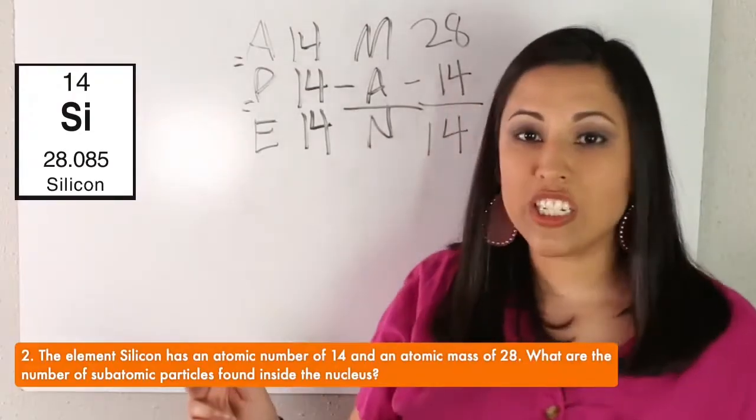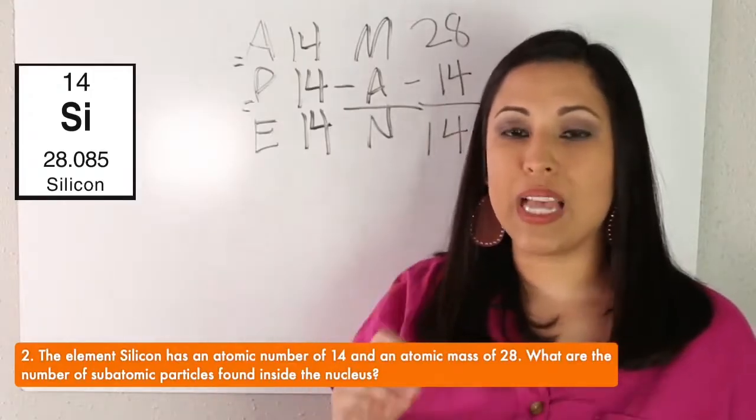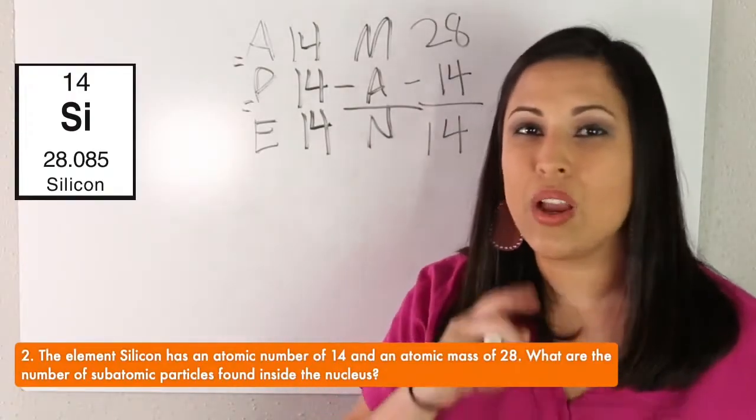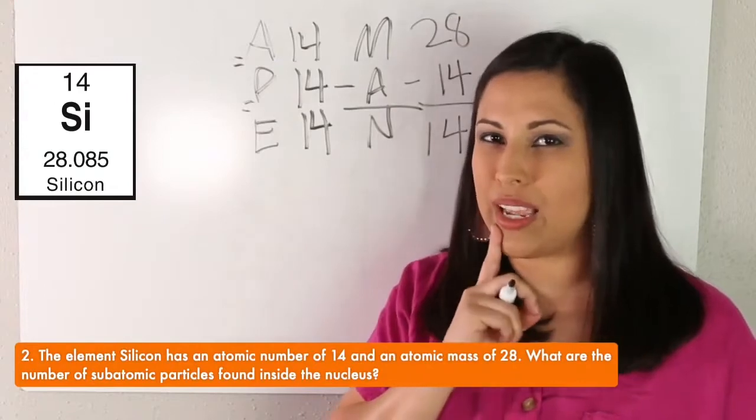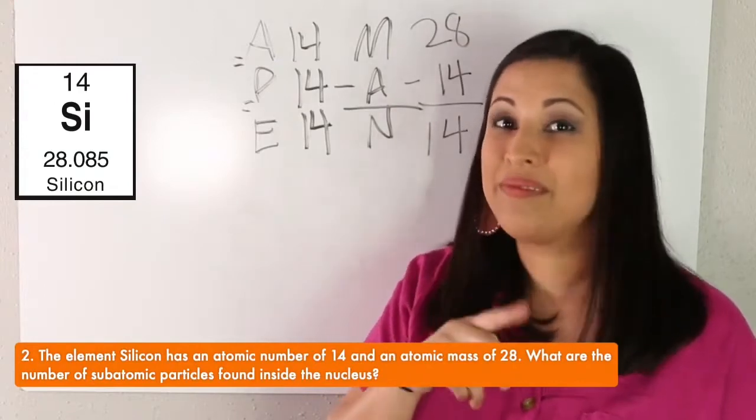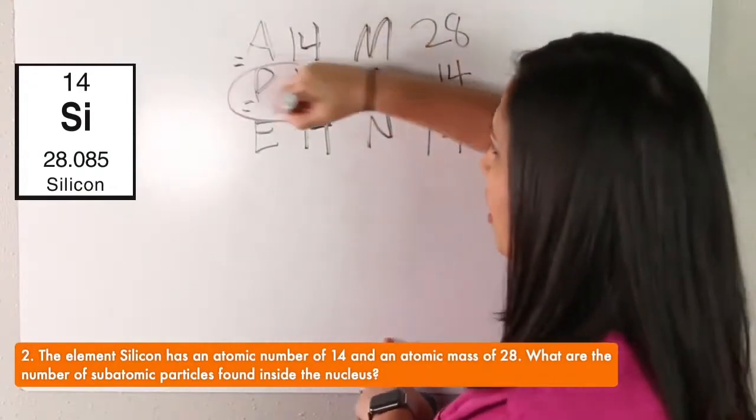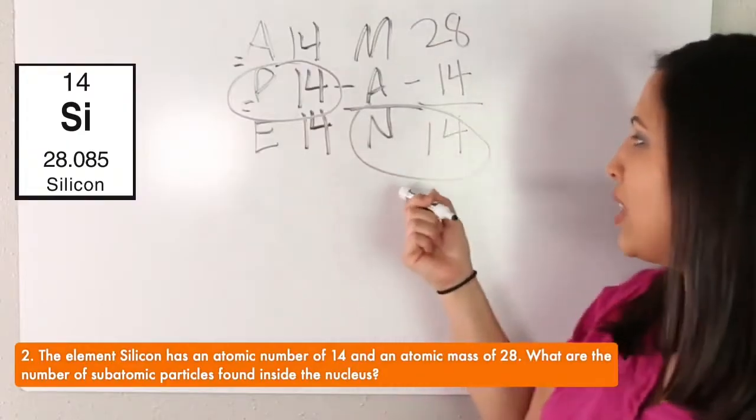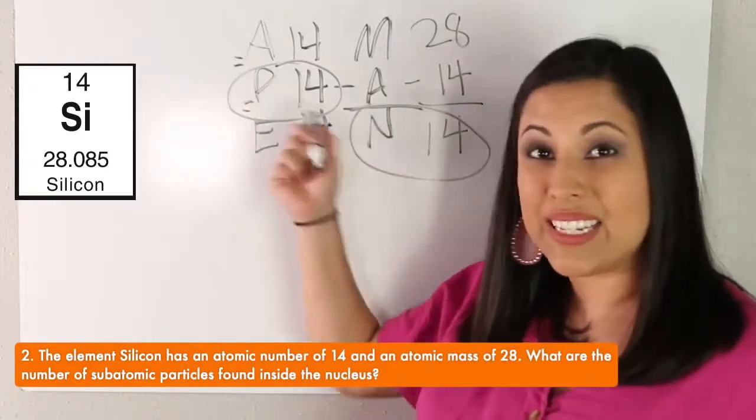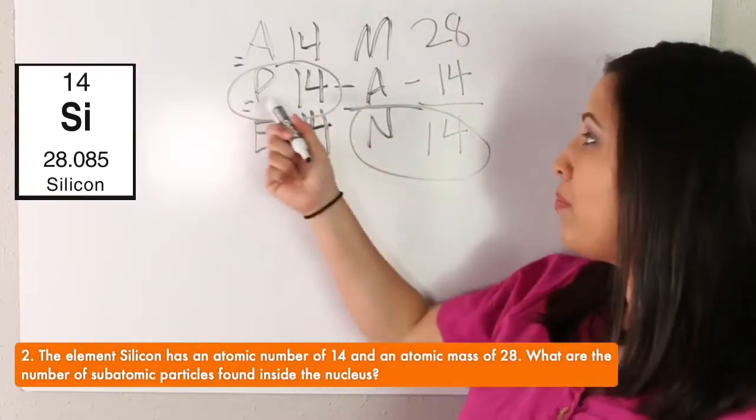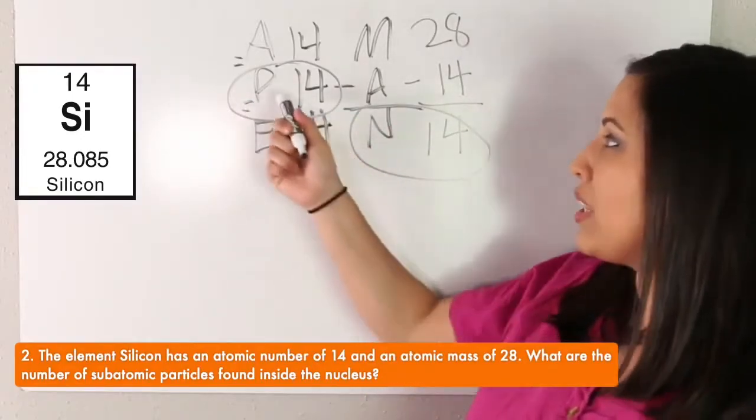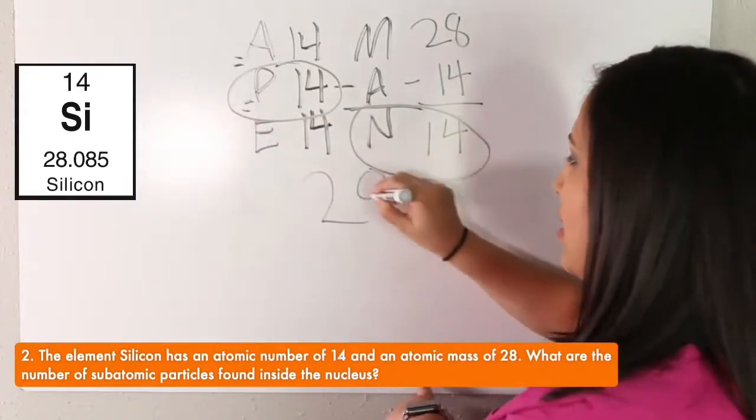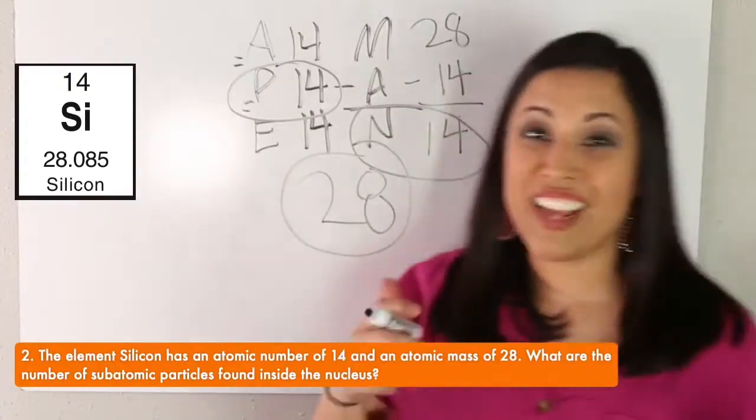Okay, our question asks, what are the number of subatomic particles found inside the nucleus? Which particles are inside the nucleus again? Our protons and neutrons are in the nucleus. So we're going to add these together. The total number of particles in the nucleus would be 28. Good job.